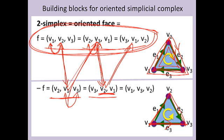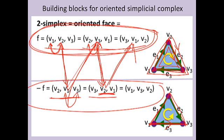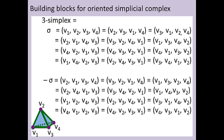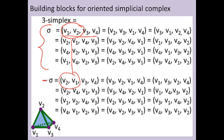Either plus f with the clockwise orientation, or minus f via an odd permutation, giving the counterclockwise orientation. For a three-simplex, represented by an ordered quadruple, there are now twelve different permutations that will represent the same oriented simplex. And if I again do an odd permutation, for example interchange v1 and v2, I have reversed the orientation. So there are twelve different ways to represent the same oriented simplex sigma, as well as twelve different ways to represent the three-simplex minus sigma.